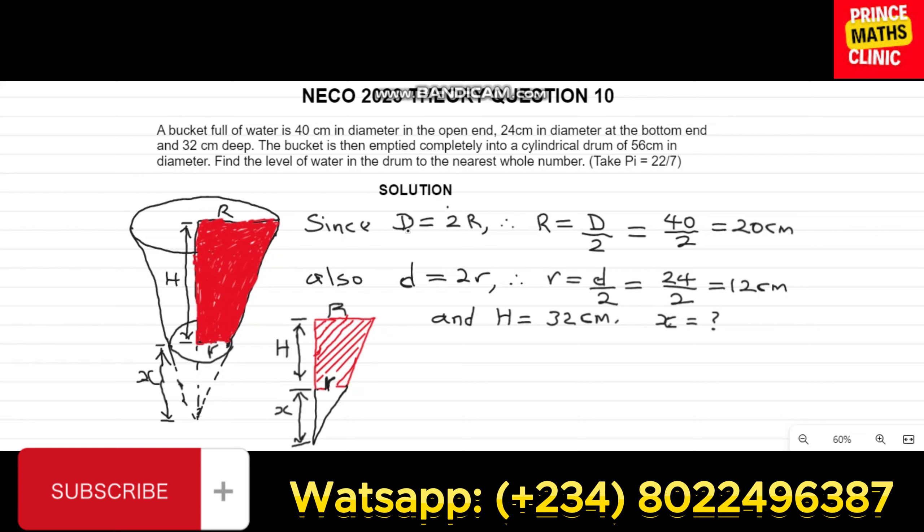We are given the diameter of the open end to be 40 cm. Therefore, to find the radius, radius is now diameter divided by 2. And if you divide 40 by 2, you will get 20 cm. Similarly, the diameter of the lower end is also small d equals to 2 times small r. We have small r is now small d divided by 2. And if you do that, you will get 12 cm. Then the height, which is capital H, is given as 32 cm. While the small height of the cone, let's call that X.